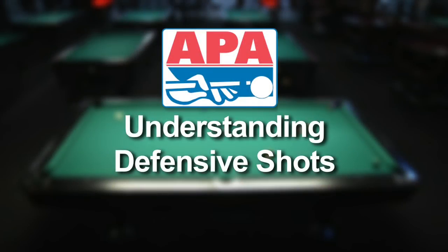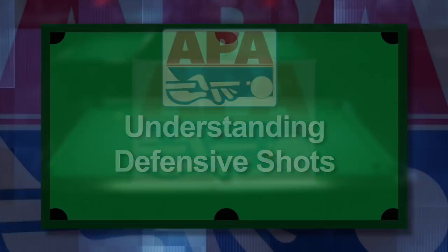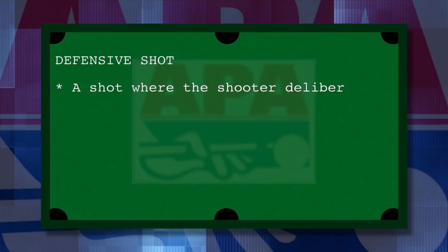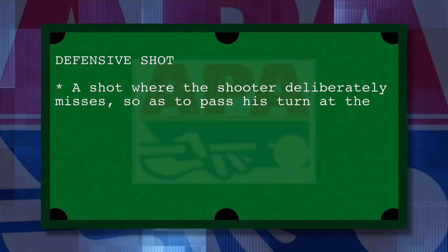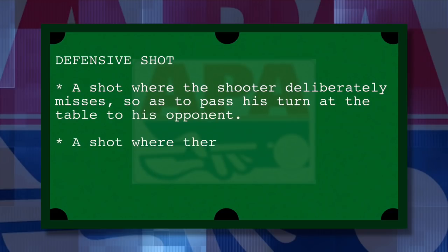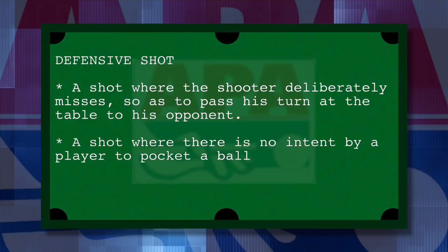Welcome to this short video designed to help you better understand defensive shots. The APA official team manual defines a defensive shot as a shot where the shooter deliberately misses so as to pass his turn at the table to his opponent. Simply stated, a defensive shot is a shot where there is no intent by a player to pocket a ball of his category.